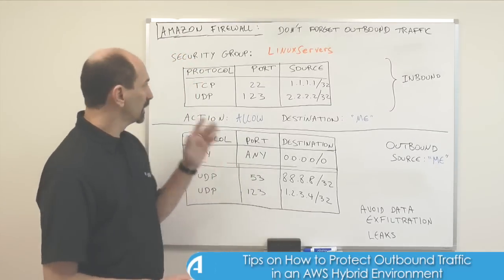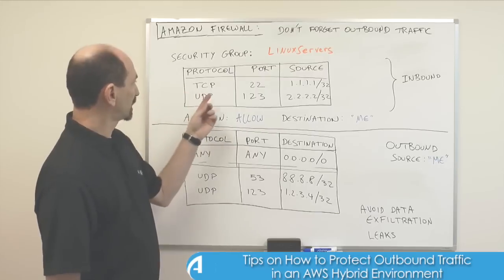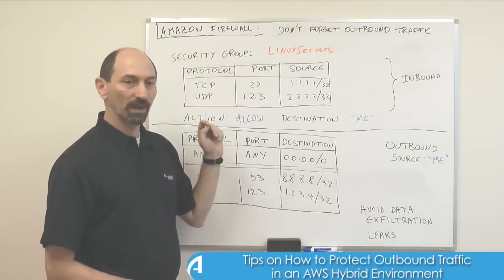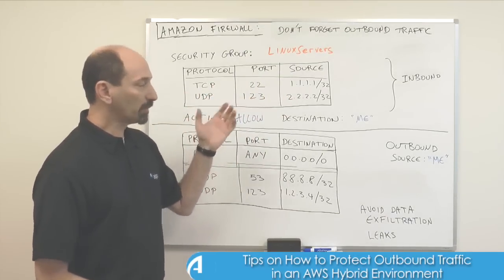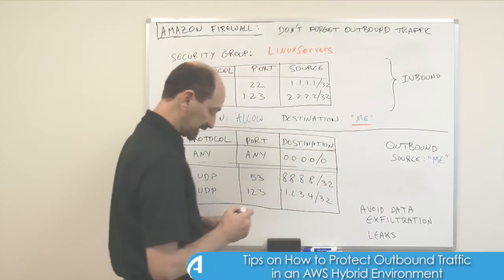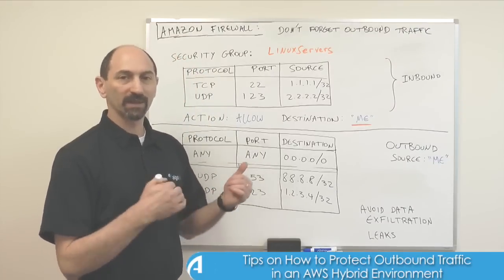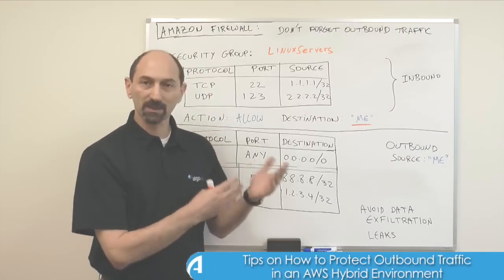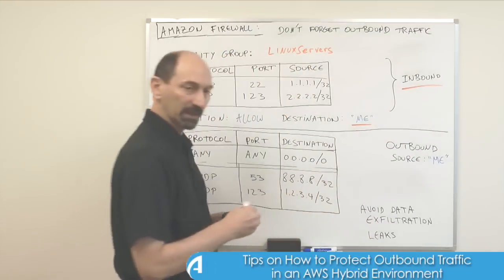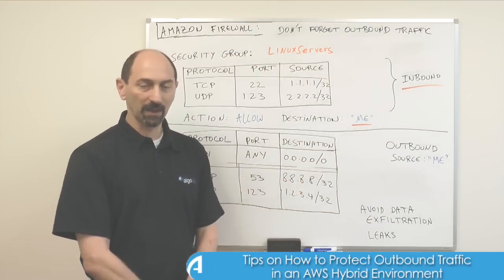Just a brief reminder: a security group is really a list of rules, and it sort of looks like this. You have your protocol, your port, and the source — where the traffic might come from. The destination is always implicitly me — it's always the server or the instance on which the security group is associated. Now this really describes inbound traffic, traffic coming from various addresses to the servers in the Amazon environment.